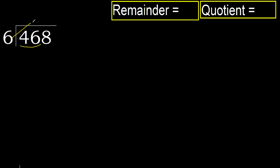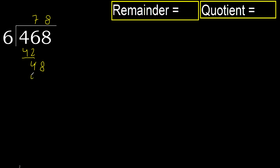6 multiplied by 8 is 48, which is greater. 6 multiplied by 7 is 42, which is not greater. Subtract: 46 minus 42 equals 4. Next, bring down 8 to get 48. 6 multiplied by 8 is 48, which is not greater. Subtract.